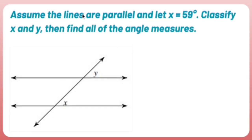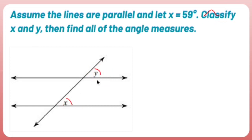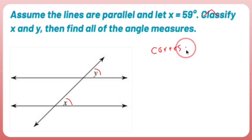Assume the lines are parallel and let x equal 59 degrees. Classify x and y, then find all of the angle measures. Well, here's x, here's y, and they are related because they are considered corresponding angles.